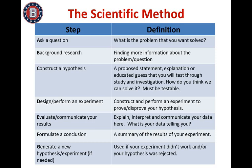Usually hypotheses come in the form of if-and-then statements. Next, you're going to design and perform an experiment. Using what you know, you will construct and perform an experiment to either prove or disprove your hypothesis. In doing so, this is where you will gather materials, observe and record data, take measurements, and identify a single test variable. After that, you're going to evaluate and communicate your results — a way to explain, interpret, and communicate your data. You really want to use this step to look at what your data is telling you.